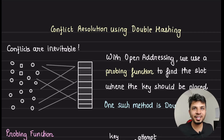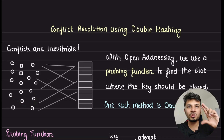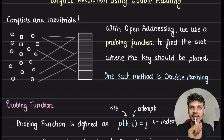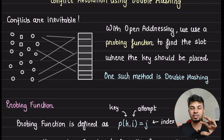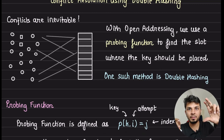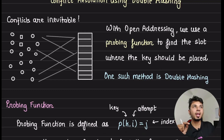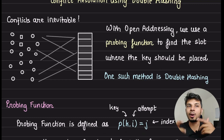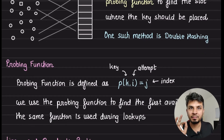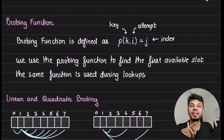Conflicts are inevitable because we are trying to map a large application's key space into a small hash table. The technique we are discussing today is called double hashing, which is a probing technique used with open addressing. Open addressing does not use an auxiliary data structure like a linked list to store collided keys; instead it leverages the free slots available in the hash table itself.